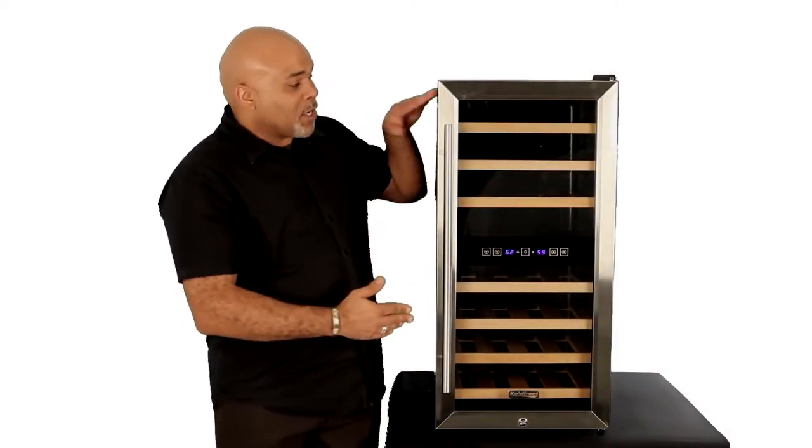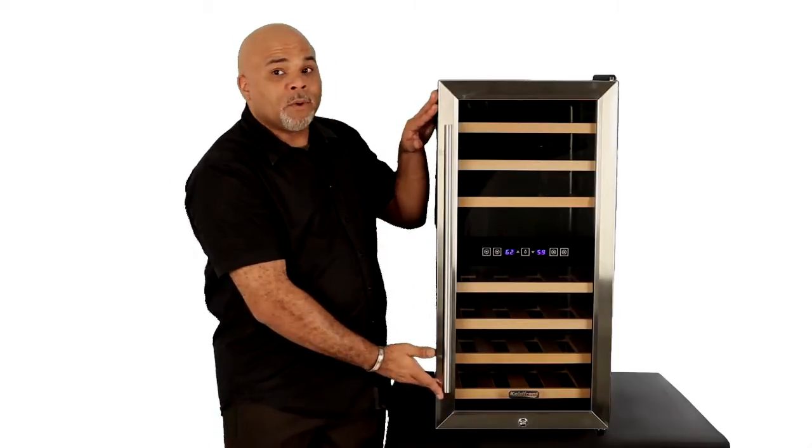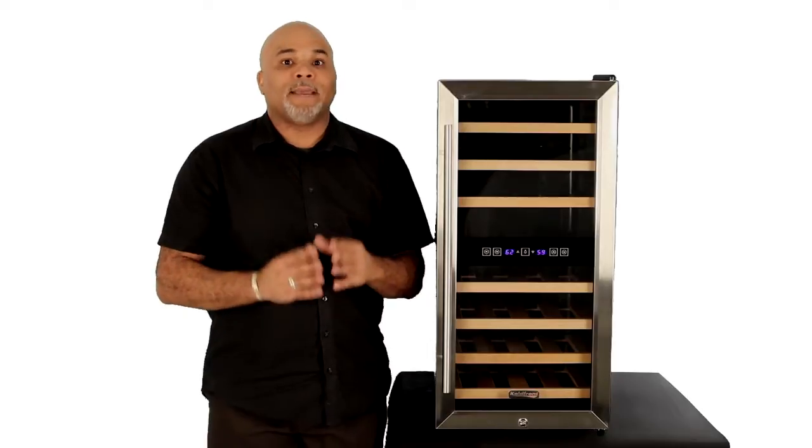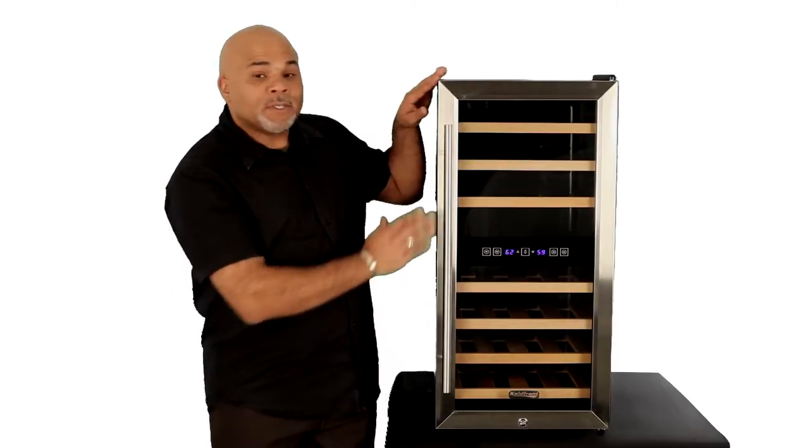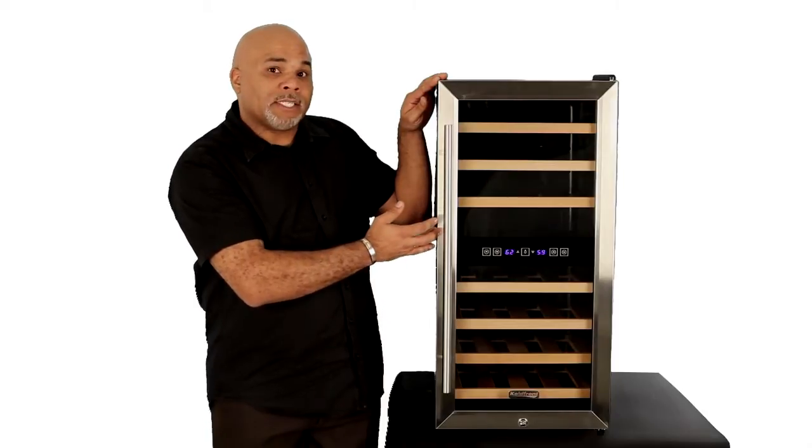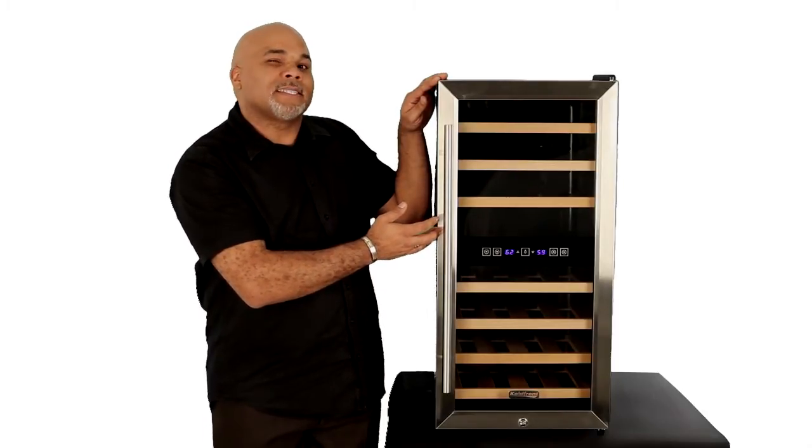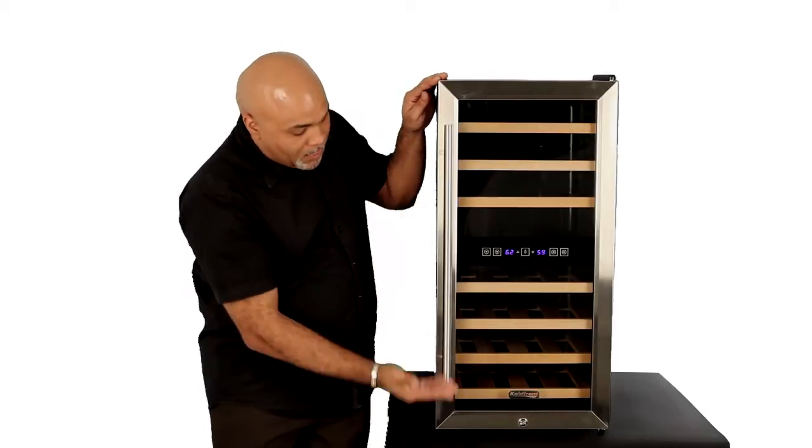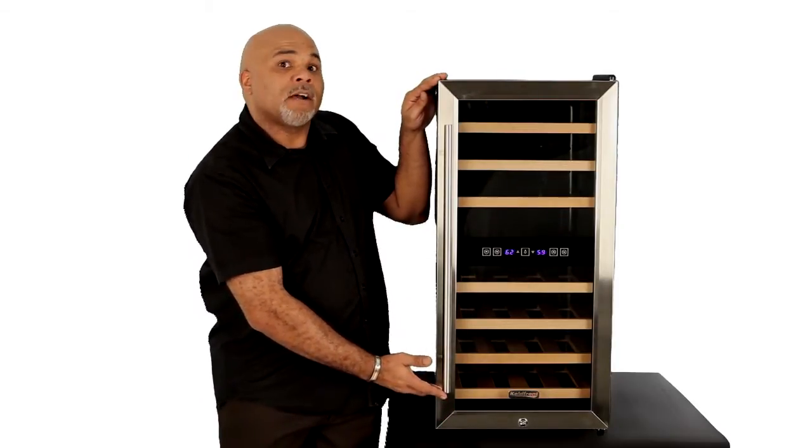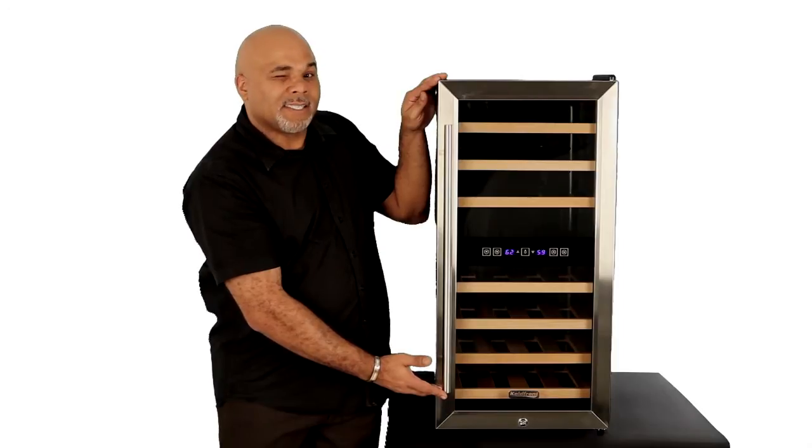The upper zone and the lower zone of the TWR-327ESS both hold 16 bottles. The upper zone would be used primarily for red wine and has a temperature range of 54 to 66 degrees Fahrenheit. The lower zone would be used primarily for whites and has a temperature range of 46 to 66 degrees Fahrenheit.